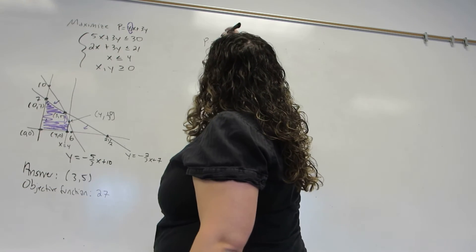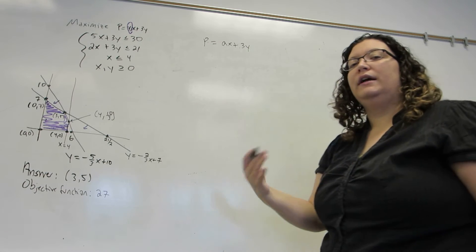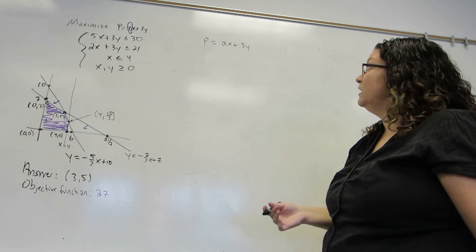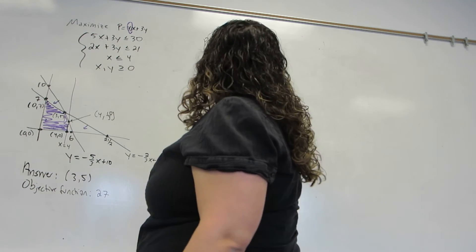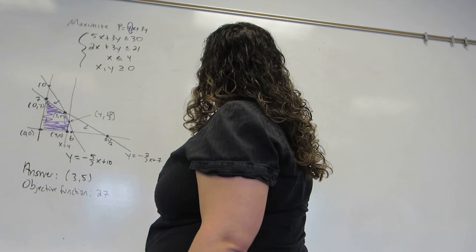So instead of 4, I'm going to put an a as a variable until I can figure out what a is allowed to be. I'm then going to solve this for y so that I can graph it.